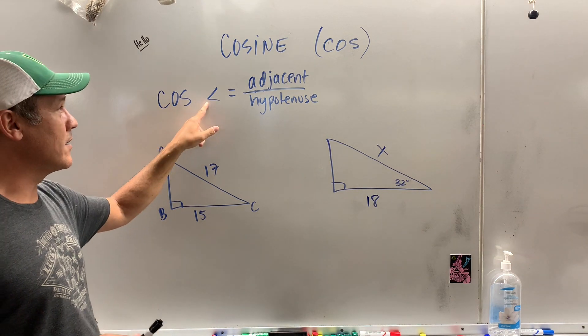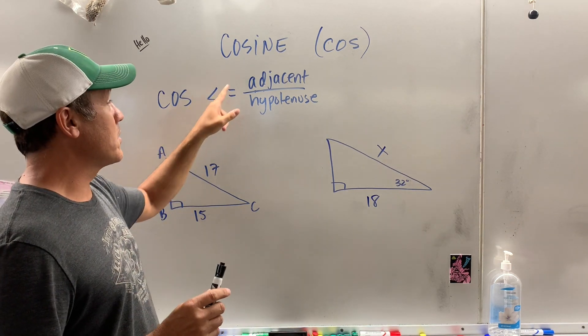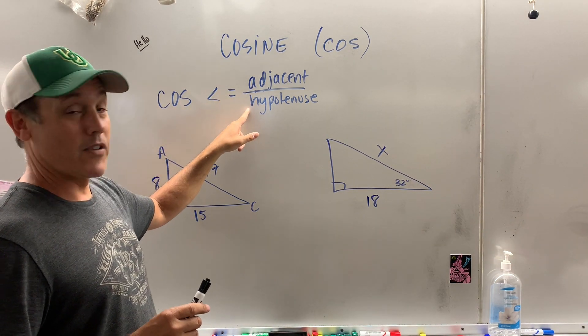Cosine of an angle is equal to a ratio. This ratio is adjacent over hypotenuse.